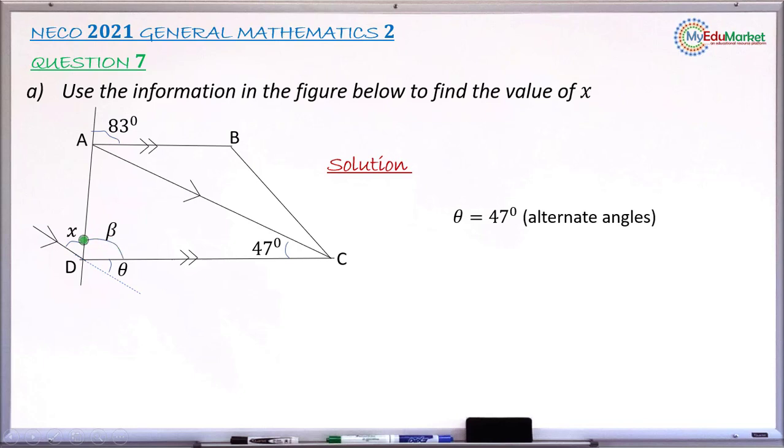So beta will now be equal to this angle 83 degrees. And the simple reason is the two angles are corresponding angles, and corresponding angles are equal. So beta takes the size 83 degrees.